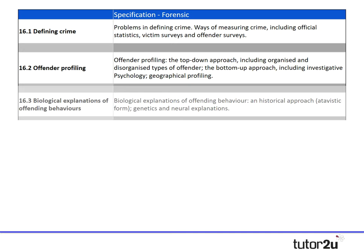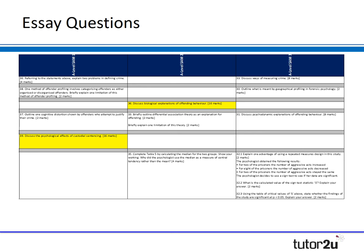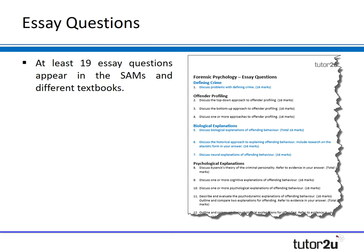In terms of the spec, I'll highlight the whole thing on screen so you can see an overview. It's quite a large part of the specification, but a really interesting unit for students. I've also provided a mapping of where the different sample questions for sample papers 1, 2, and 3 occur, and there are some essay questions in there — for example, discuss the psychological effects of custodial sentences and discuss biological explanations of offending behaviour. There are 19 potential essay questions in this topic, so it is a big topic.